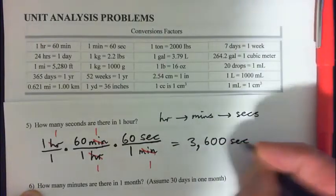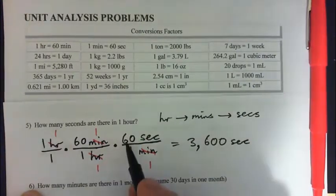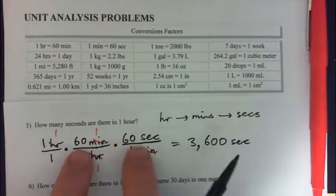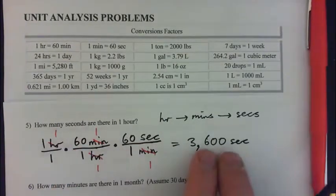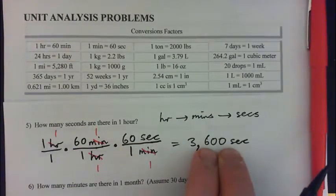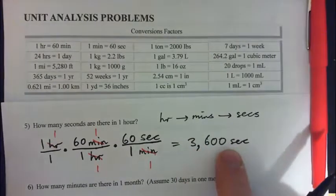I know that because 6 times 6 is 36, and there's a factor of 10 for each of the 60s, so we multiply by a factor of 100 to get 3,600.